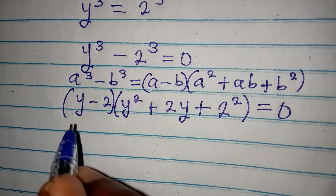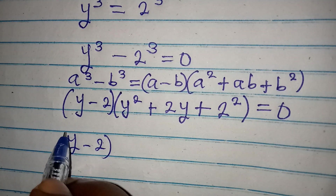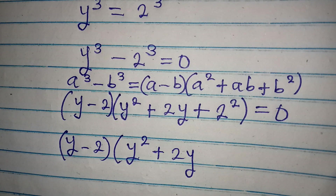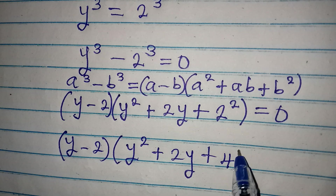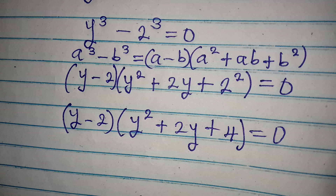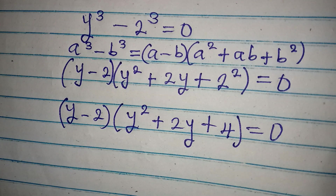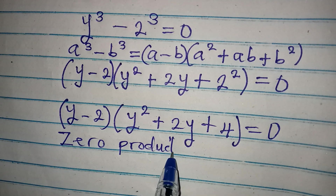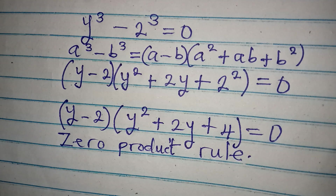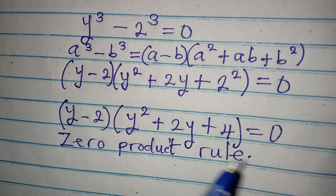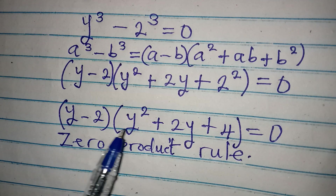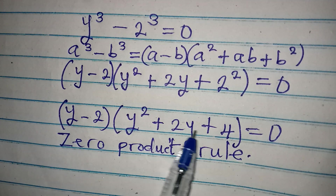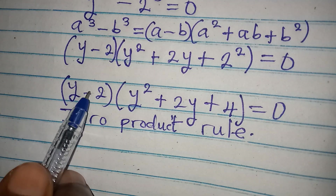So we have (y - 2)(y² + 2y + 4) = 0. Since two brackets multiply to give 0, we apply the zero product rule. We apply this rule whenever two terms multiply to give 0, so either (y - 2) = 0 or (y² + 2y + 4) = 0.